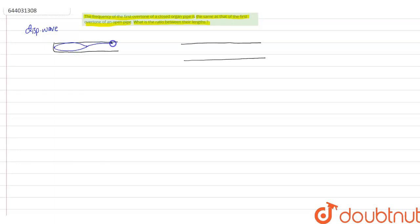this in a closed organ pipe. You can see that this part is lambda by 2, and this part is lambda by 4.